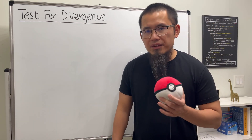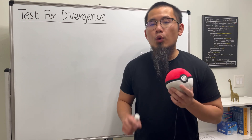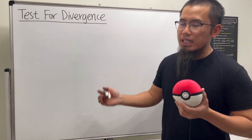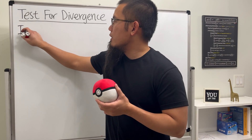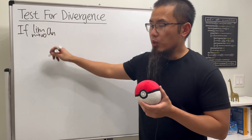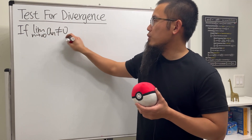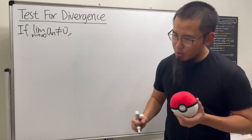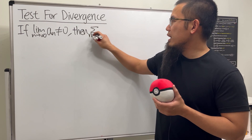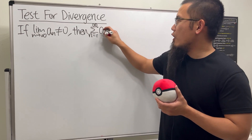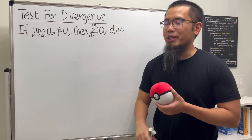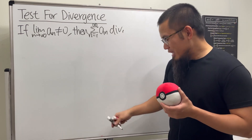Whenever we're trying to see if an infinite series converges or not, one of the things we should always do first is the test for divergence, which says: if we take the limit as n goes to infinity of a_n and this is not equal to zero, then we can conclude right away that the infinite series from n equals one to infinity of a_n diverges.